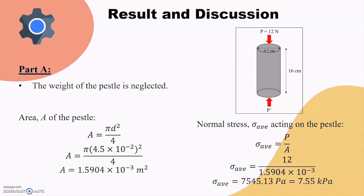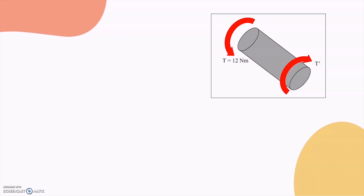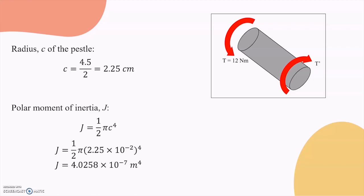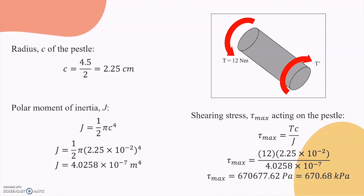Next, to compute the shearing stress applied to the pestle, which is a shaft with circular cross section that is caused by the application of equal and opposite transverse forces as shown in the figure here, we first calculate the polar moment of inertia J. Since the radius of the pestle is 2.25 cm, by applying the formula J equals to 1 over 2 pi c to the power of 4, we will obtain the J equals to 4.0258 times 10 to the power of negative 7 meter to the power of 4. By knowing the value of J, the shearing stress acting on the pestle under torsional loading can be calculated by using the formula tau max equals to tc over J. After solving, we found that the tau max is 670.68 kilopascals.